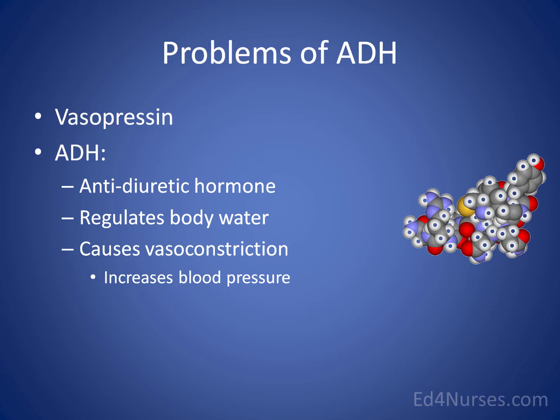Another situation where we see abnormal amounts of ADH is in patients with cirrhosis. A patient with cirrhosis who develops portal hypertension can end up developing ascites as a result of too much ADH being produced by the liver. So ADH is antidiuretic hormone.